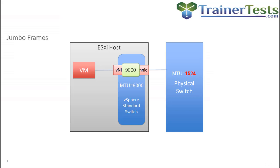If that frame is bound for something on the physical network, it flows out of one of our VMNICs towards the physical switch. But if the physical switch is configured for an MTU of 1524, the frame is too big to comply with the configured MTU of the physical switch. So the physical switch is going to have to break this frame up into smaller chunks and individually address each of those smaller frames. This is called fragmentation and reassembly, and it has a really significant performance impact because the CPU of the physical switch is going to be working very hard to break up those jumbo frames and create smaller frames.